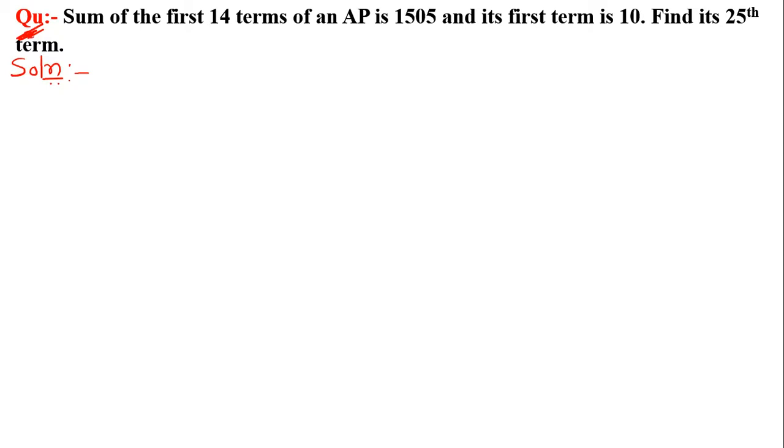Question: Sum of first 14 terms of an AP is 1505 and its first term is 10, so find its 25th term. In this question, given S14 equals 1505 and first term a equals 10, find its 25th term.